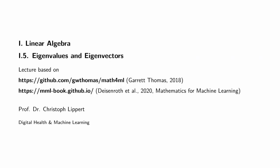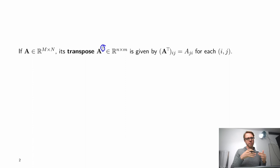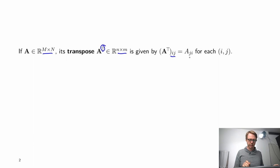Let's start slowly by introducing the transpose of an m by n matrix A, written as a superscript T, which is an n by m matrix. So the two dimensions are flipped, and the transpose has for each i and j the entry a_ji. So we just flip the indices.